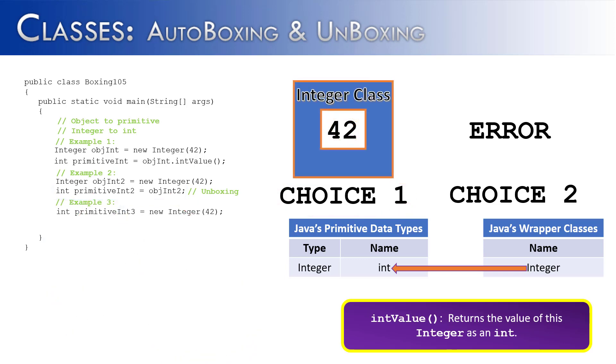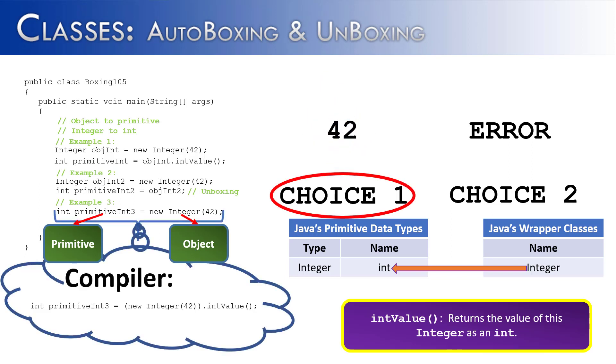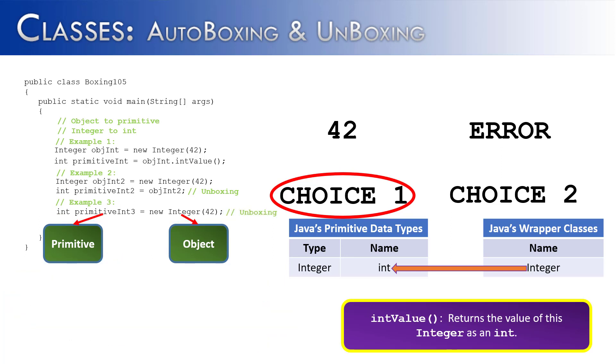In the third example, which is kind of a crazy example because it just doesn't look right. On the one side you have a primitive, on the other side you're saying new integer 42. So we're creating the object on the right side but we have a primitive on the left side. Is this going to cause an error or is it going to unbox it? Well it's going to unbox it because as you've probably guessed the compiler is going to go behind there, find the integer value and allow it to store it in primitiveint3. So unboxing is moving from an object to a primitive and it happens automatically in almost every single case.